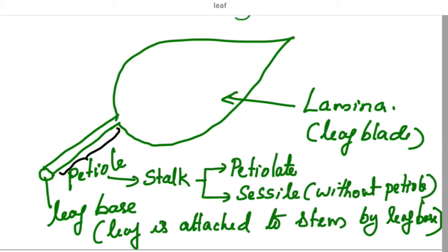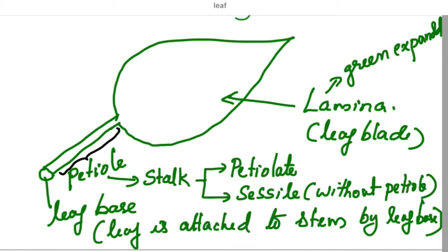The green expanded part of the leaf is called the leaf lamina. So lamina is the green expanded part. The leaf base is by which it is attached to the stem, petiole is the stalk, and lamina is the green expanded part — these are the three parts of the leaf.